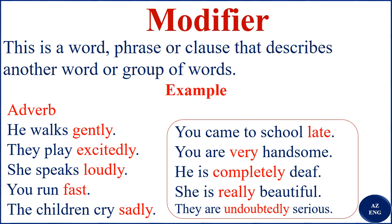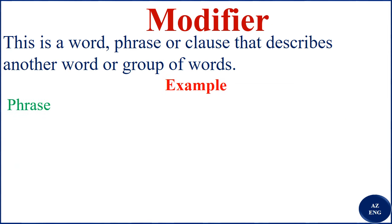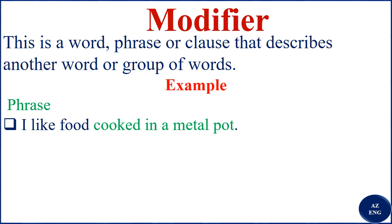So we've talked about modifiers as nouns, adjectives, and adverbs. Now, modifiers can also be phrases. For example, 'I like food cooked in a metal pot' — the phrase 'cooked in a metal pot' describes and modifies 'food.' It is our modifier, and it is a phrase.